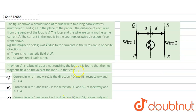Hello everyone, let us start with our question. In this question, what is given? The figure shows a circular loop of radius a with two long parallel wires numbered one and two, all in the plane of the wire. The distance of each wire from the center of the loop is given as d, and the loop and the wire are carrying the same current i. The current in the loop is in the clockwise direction as seen from above.